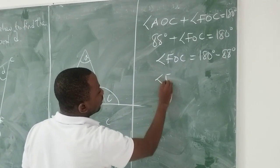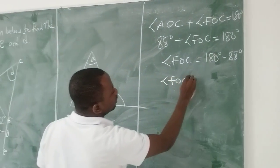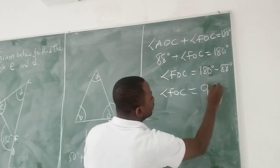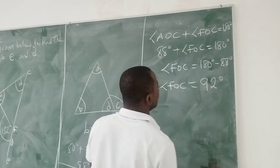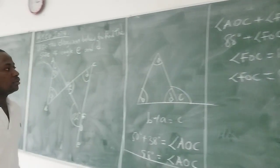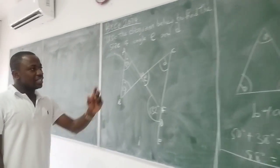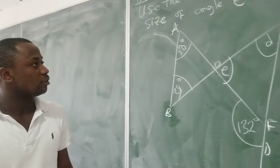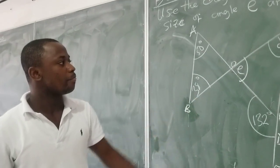Angle FOC is equal to 180 degrees minus 88 degrees, which gives us 22 degrees. That represents the size of angle E.